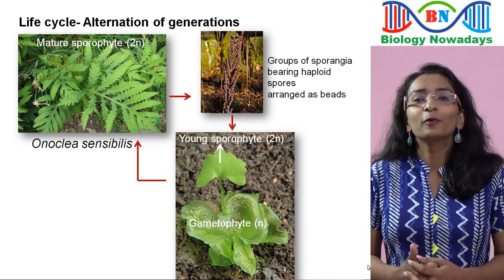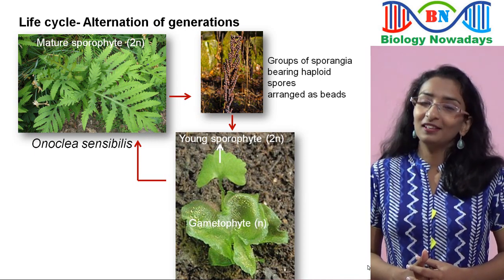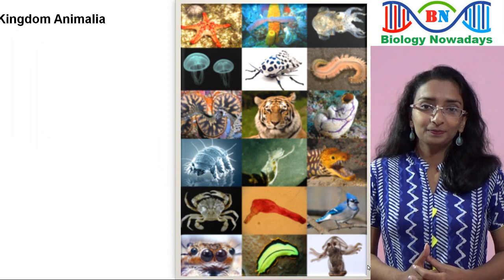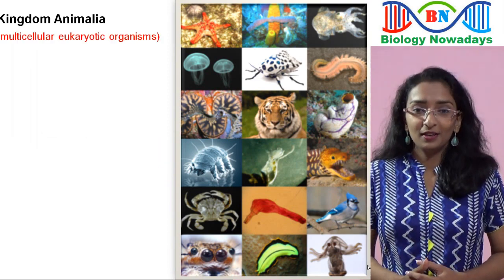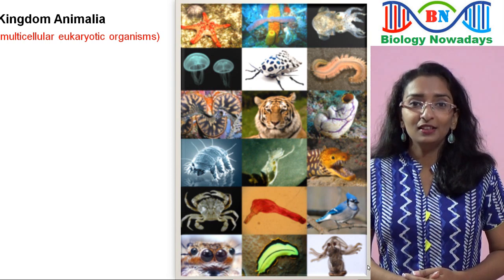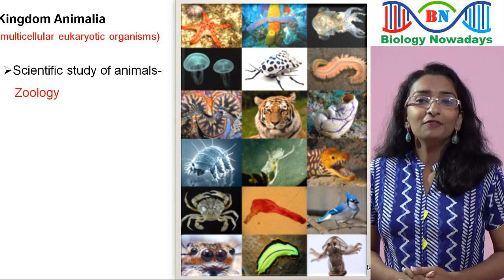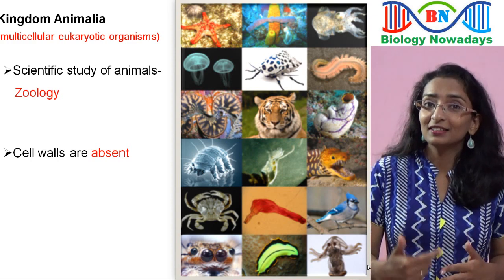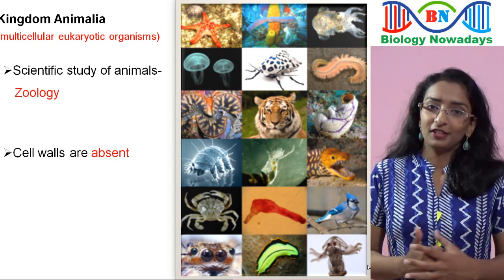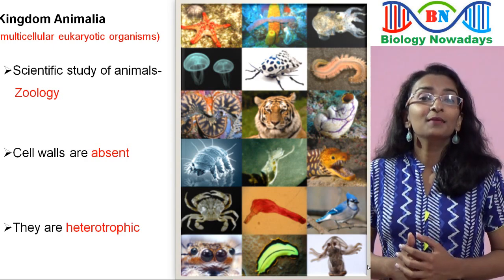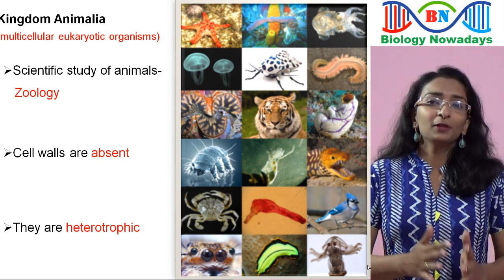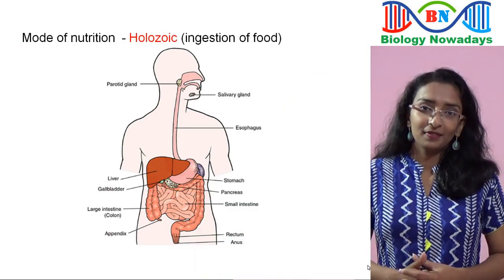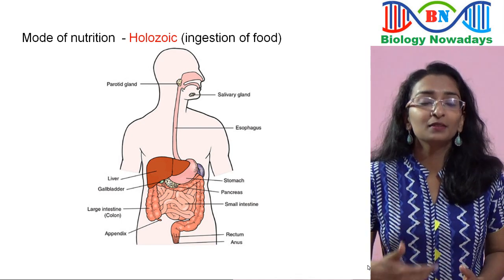That was an overview of Kingdom Plantae, and we will learn more about it in another lecture. Now let's see the main members and features of Kingdom Animalia. The members of this kingdom are multicellular eukaryotic organisms. The scientific study of animals is called zoology. An important feature is that their cells don't have a cell wall. Another characteristic feature is that they are heterotrophic — they cannot prepare their own food. They may directly depend on plants for food, or sometimes depend on animals that feed on plants. The mode of nutrition here is holozoic, that is by ingestion of food and internal processing of it.